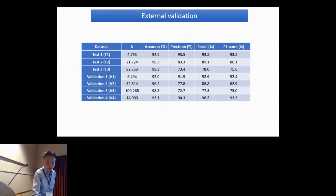In conclusion, machine learning methods using vectors derived from NLP text vectorization techniques - TF-IDF and Word2Vec - were developed to classify literature related or unrelated to DILI. The machine learning models trained using the combined vectors improved the classification performance. This developed analysis pipeline is generalizable, allowing us to apply this to other NLP problems. Thank you.